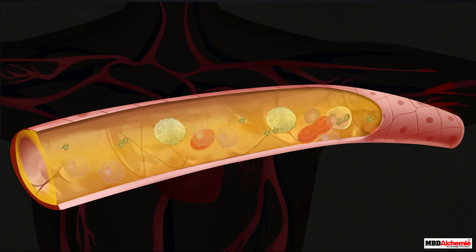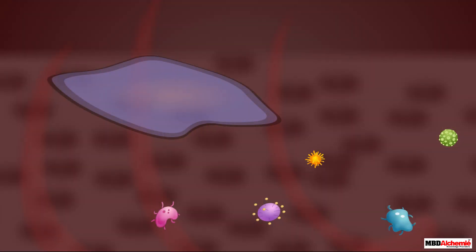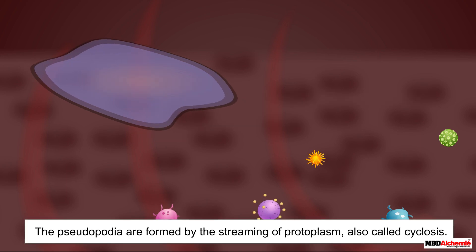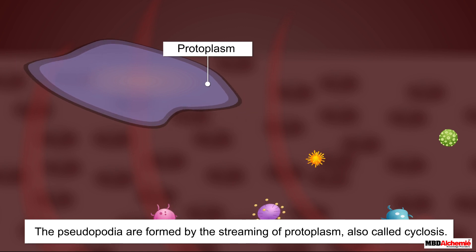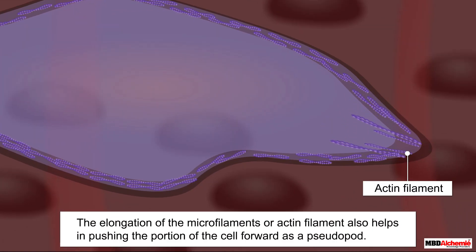For example, specialized cells of the blood such as the macrophages and leukocytes move about in tissues to protect the body against foreign substances. The movement of these cells begins by the protrusion of pseudopodia, or false feet, from the cell body. The pseudopodia are formed by the streaming of protoplasm, also called cyclosis. The elongation of the microfilaments or actin filaments also helps in pushing the portion of the cell forward as a pseudopod.